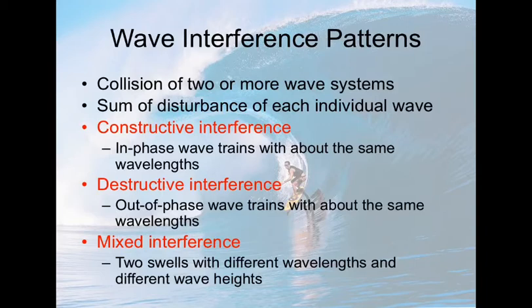There are three types: constructive, destructive, and mixed. In constructive interference, wave trains bump into each other which have about the same wavelength, same period, and so on.